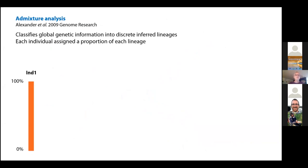I'm going to present one type of analysis — admixture analysis — because it really represents what I'm talking about very well and is very visual. I'll walk you through it so you understand the graphics. Admixture analysis basically takes the global variation you see and classifies it into discrete lineages. You can think of it a bit like a PCA in which similar data is grouped together, but in this case it's used to infer ancestral lineages.